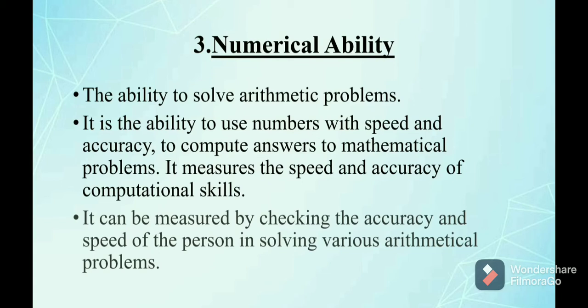The third primary mental ability is numerical ability — the ability to solve arithmetic problems. It is the ability to use numbers with speed and accuracy to compute answers to mathematical problems, measuring the speed and accuracy of computational skills. It can be assessed by checking the accuracy and speed of a person in solving various arithmetical problems.